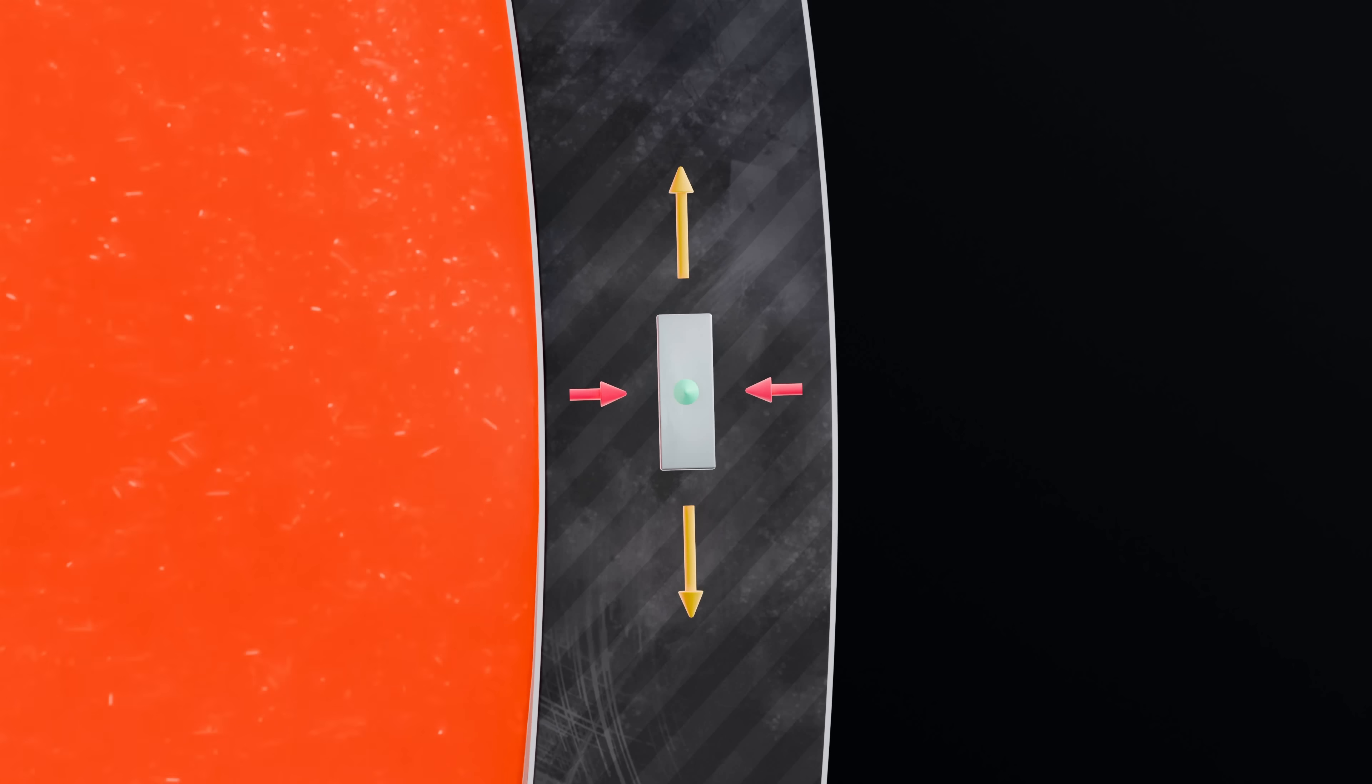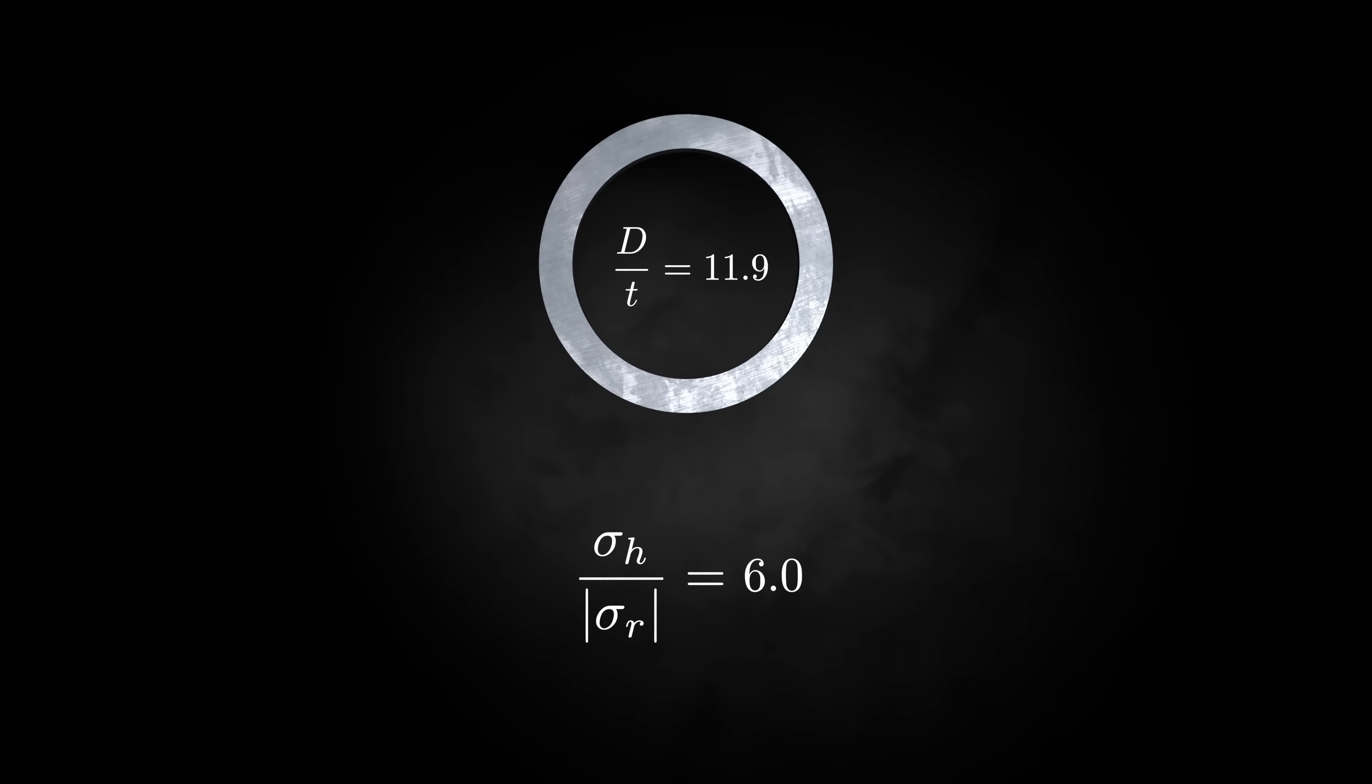To better understand the significance of the radial stress, take a look at the ratio of the hoop stress to the radial stress at the inner wall surface. If the vessel is thin-walled, meaning it has a large D over T ratio, it's clear the hoop stress will become much larger than the radial stress. In this case, it's acceptable to neglect radial stresses. But if the vessel is thick-walled, the radial stress becomes significant relative to the hoop stress and can't be ignored.